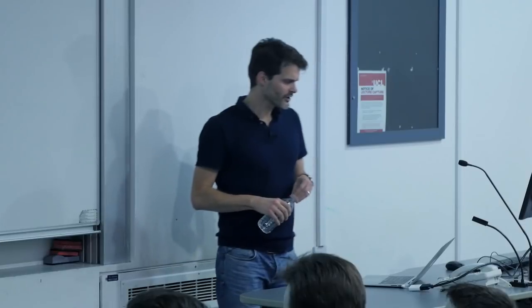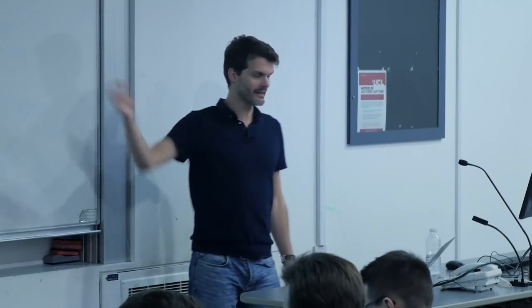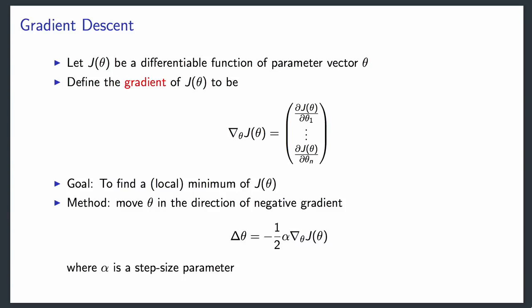This is a generic recap of gradient-based optimization. We define some differentiable function J—think of this as a loss—which is a function of your parameters. We take its gradient, which is a vector of all partial derivatives. The goal is to find a minimum, and we move the parameters in the direction of the negative gradient to do gradient descent. In the policy gradient case, we might want to find a maximum instead, but that's easy by putting a minus sign in front.